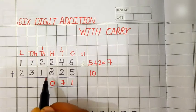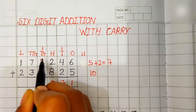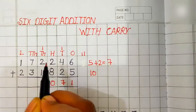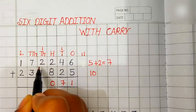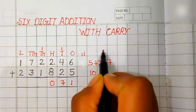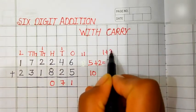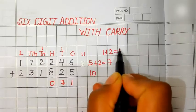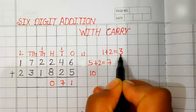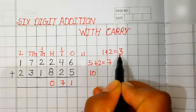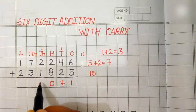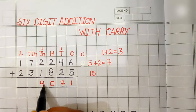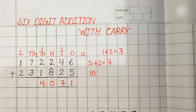Let's add the digit at 1000 place. 1 carry plus 2 is equal to 3. 3 plus 1 is equal to 4. Answer is 4.